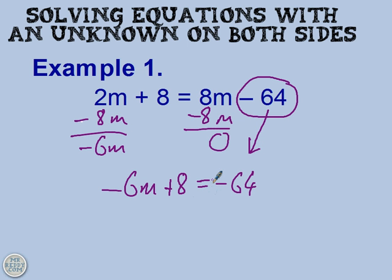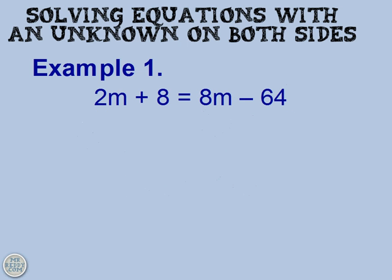Now that introduces its own problems because if you're not sure about how to change something from a positive term to a negative term and vice versa and to do that reliably, then you could make a mistake along the way. So instead, my advice is to choose the variable that has the smaller coefficient. So we've got 2m and we've got 8m.